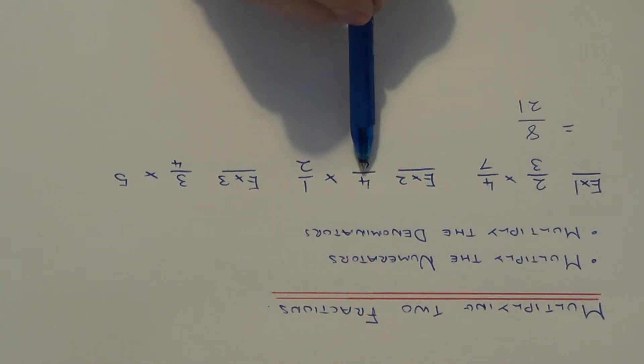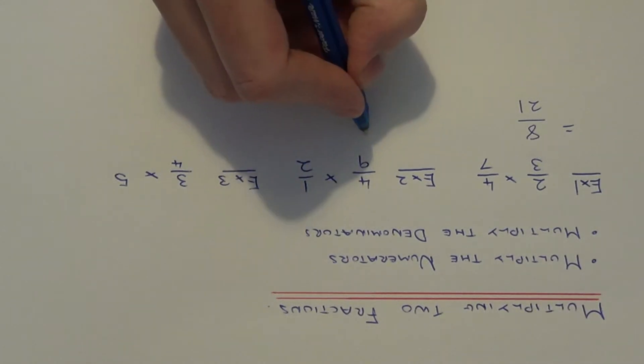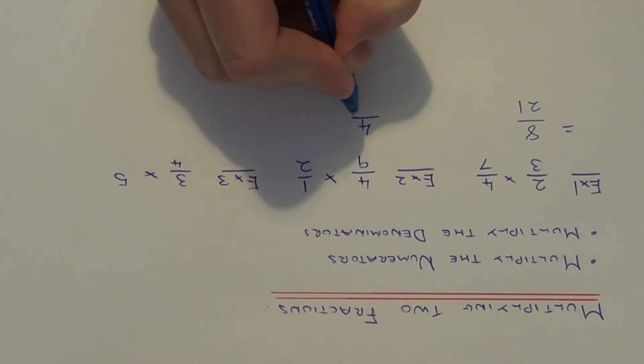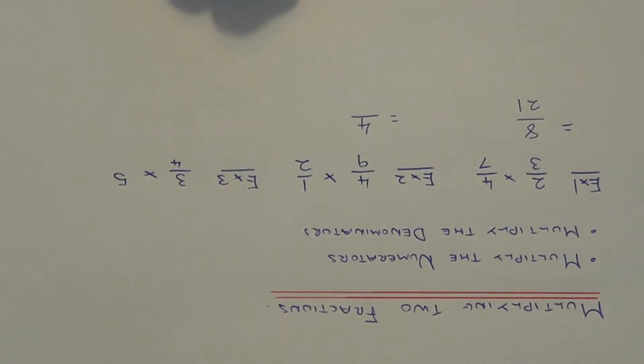Let's move on to example two. This time we have 4 ninths times 1 half. Again, just multiply the numerators, 4 times 1 is 4. 9 times 2 is 18.